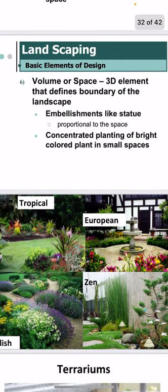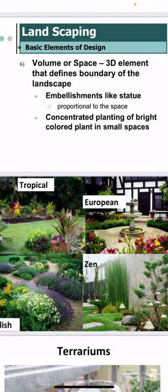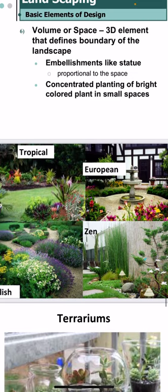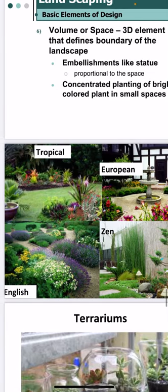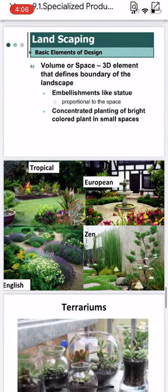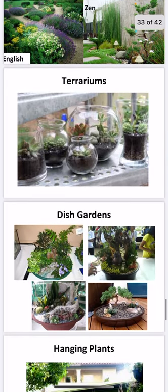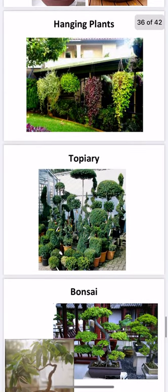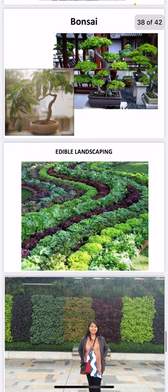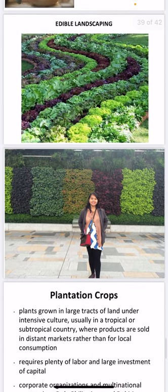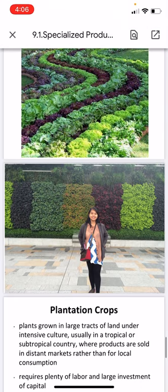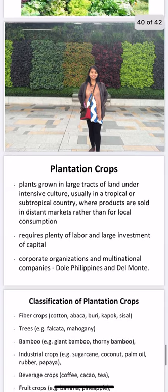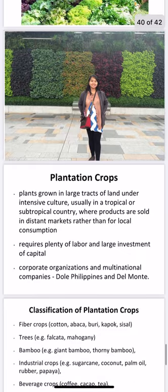Embellishments like statues should be proportional to the space, and concentrated planting of bright-colored plants works well in small spaces. There are various types of landscape design — tropical, English, European, or Zen. Examples of specialized ornamental production include terrariums and dish gardens, hanging plants, topiary, bonsai, and edible landscaping, where you can use vegetables of different varieties and colors. There is also wall landscaping or hanging landscaping, as found in Japan.